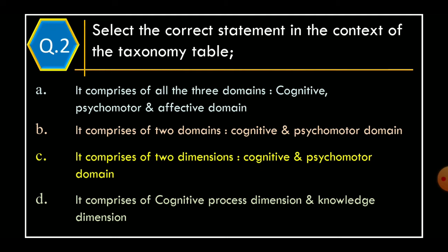Q2: Select the correct statement in the context of Taxonomy Table. Option A: It comprises of all three domains — Cognitive, Psychomotor and Affective Domain. Option B: It comprises of two domains — Cognitive and Psychomotor Domain. Option C: It comprises of two dimensions — Cognitive and Psychomotor Domain. Option D: It comprises of Cognitive Process Dimension and Knowledge Dimension. The correct option is Option D.